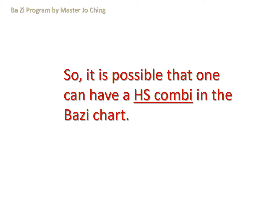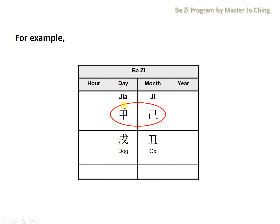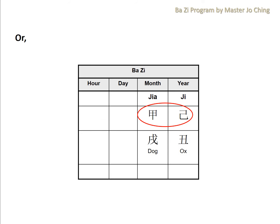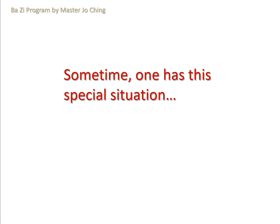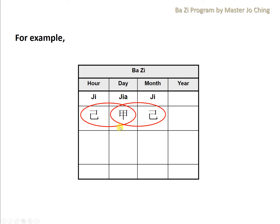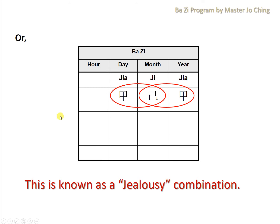It is possible that one can have a heavenly stems combination in their Ba Zi chart. For example, say you belong to the JIA Day Master, and you see that there is another JI next to you. Or you can actually have a set of heavenly stems combination just in your chart, between the year and the month pillar. Sometimes one has a special situation where you belong to the JIA Day Master and you actually have two JI side by side next to you. Or sometimes it can appear in this way.